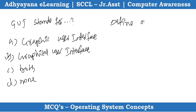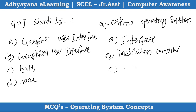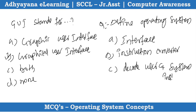Next question: Define operating system. Option A is it is an interface. Option B is instruction converter. Option C is decode user and system instructions. Option D is all of the above.